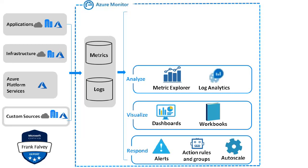Alert rules based on metrics provide near real-time alerting based on numeric values, while rules based on logs allow for complex logic across data from multiple sources. You can have alert rules in Azure Monitor with user groups, which contain unique sets of recipients and actions that can be shared across multiple rules based on your requirements.